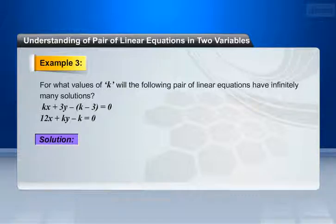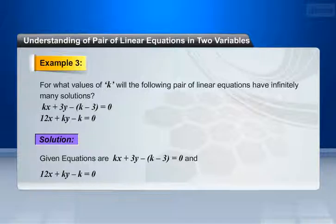Let us see the solution. Given equations are kx + 3y - (k - 3) = 0, and 12x + ky - k = 0.